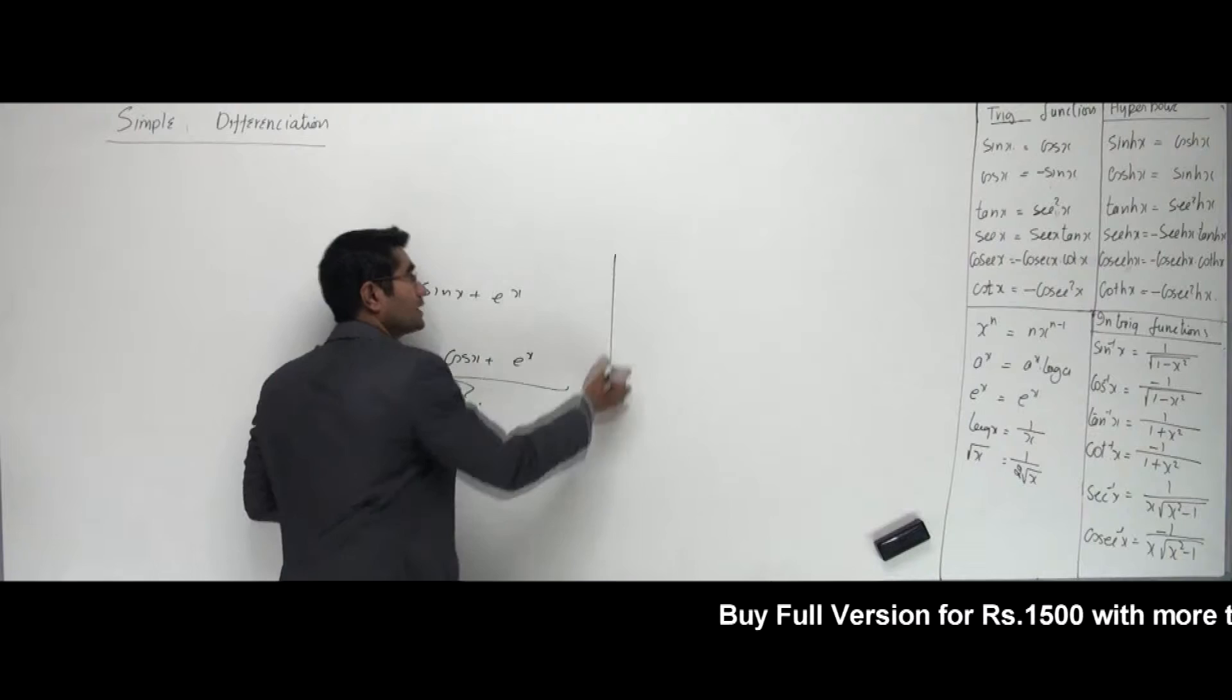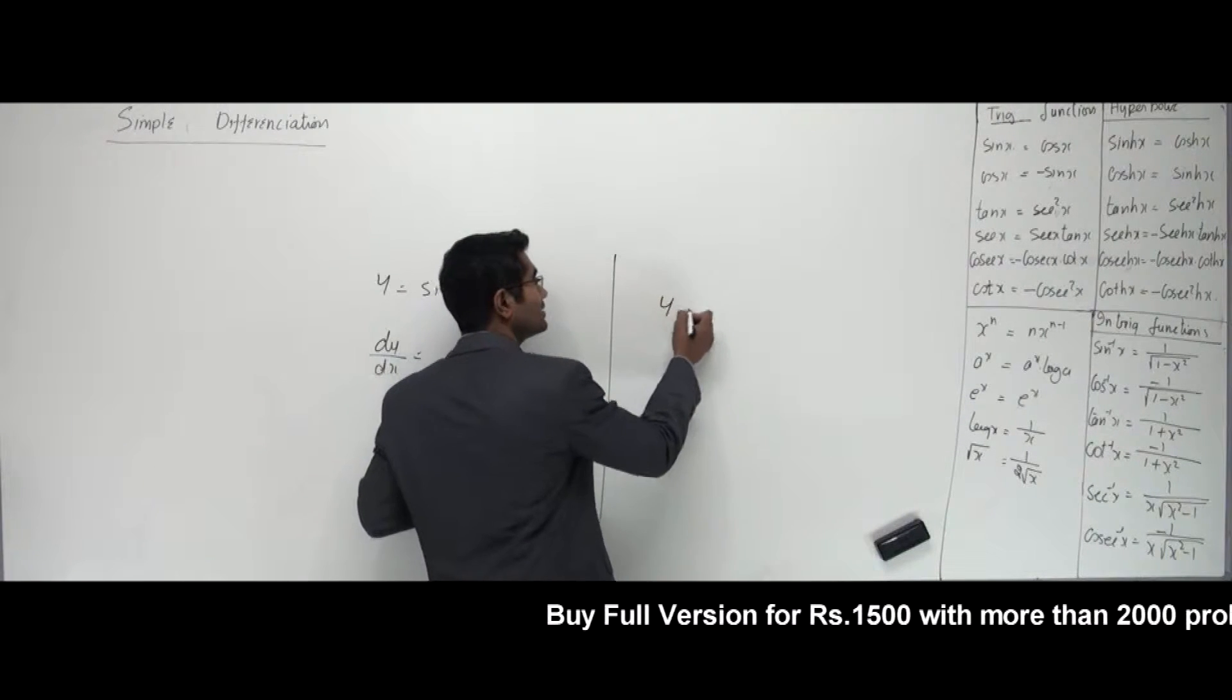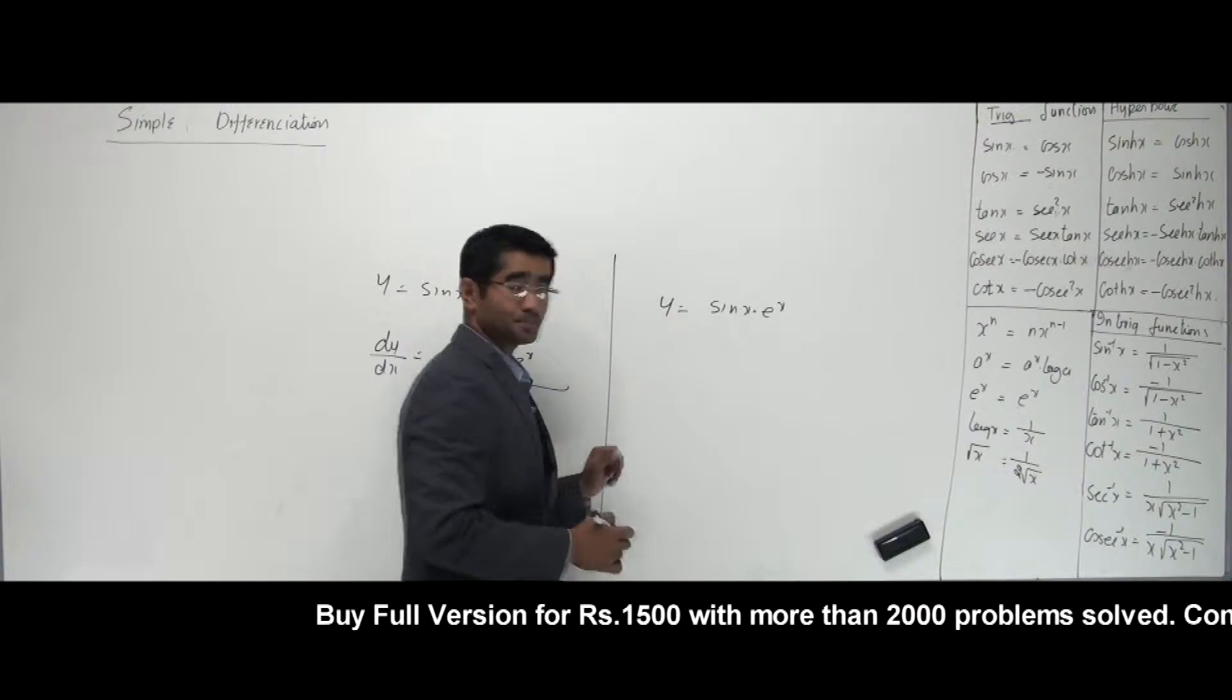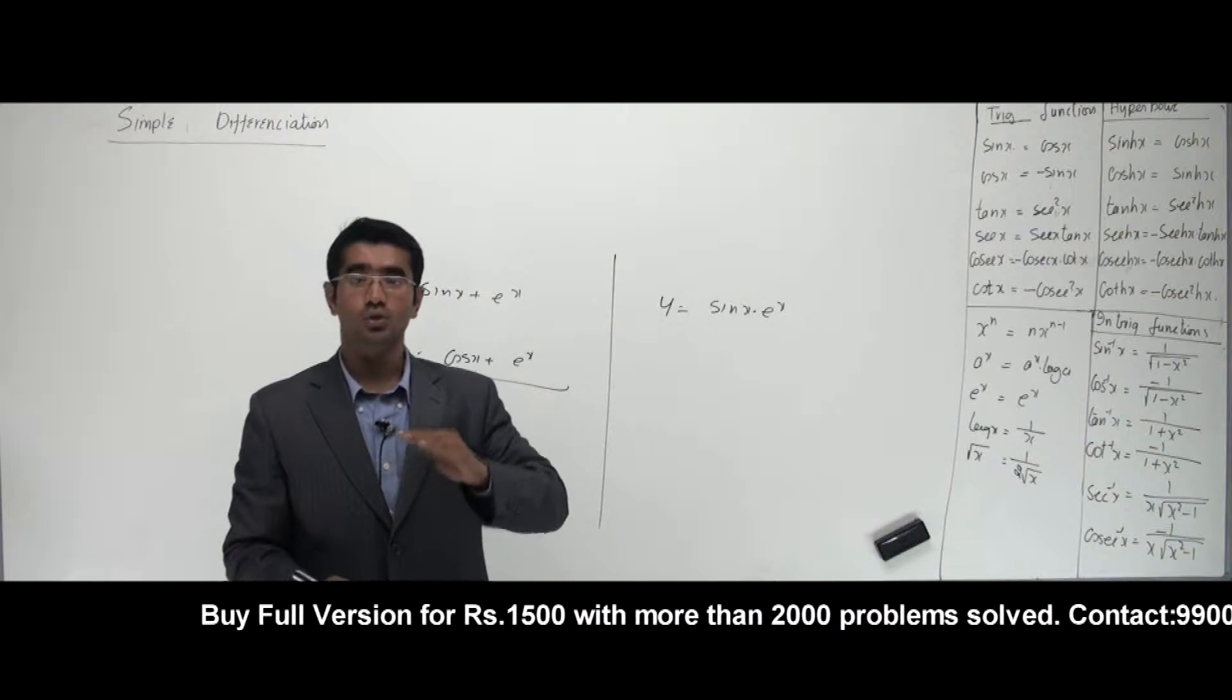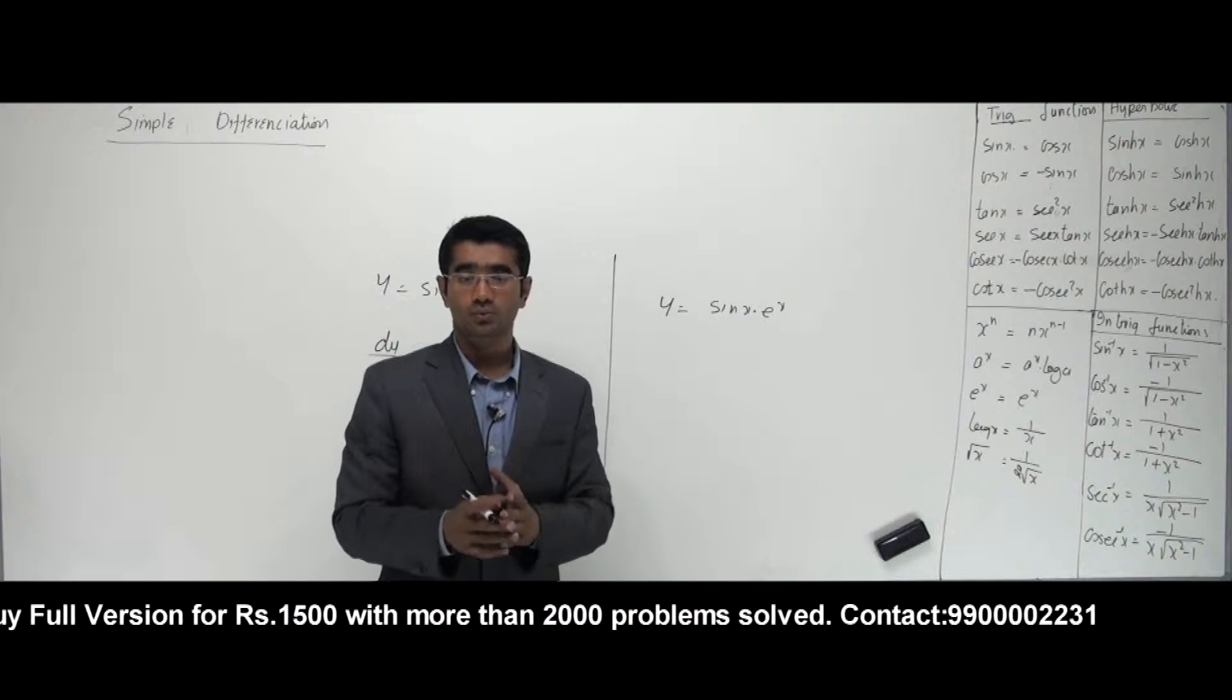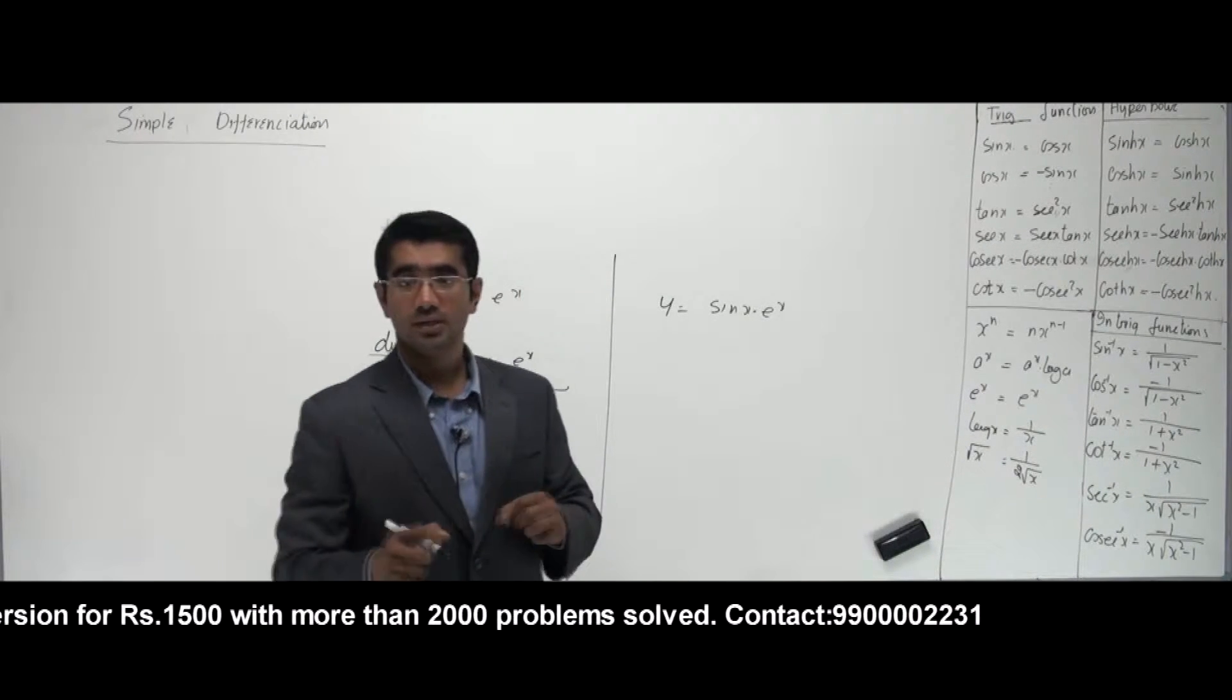When do I have complicated differentiation? It's now. If I have y is equal to sin x into e power x. Now this multiplied. Now let us talk about a rule in differentiation. We call this rule as belting rule. Belting. Fighting rule. Simple as that.